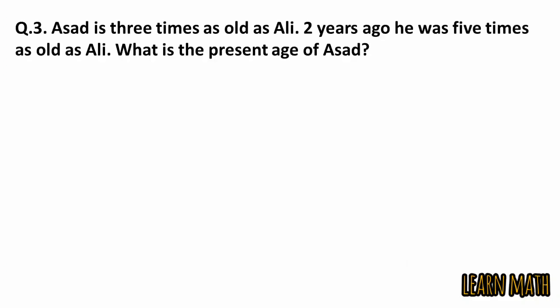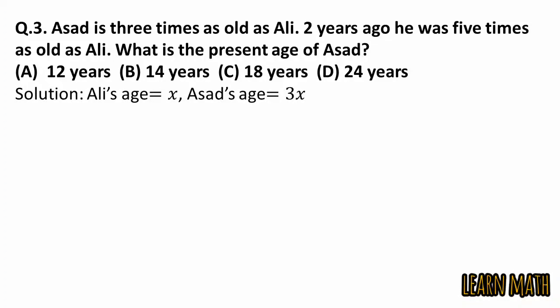The third question is Asad is three times as old as Ali. Two years ago he was five times as old as Ali. What is the present age of Asad? These four options are given. Let the present age of Ali is equal to X and Asad is equal to 3X, because Asad is three times as old as Ali.